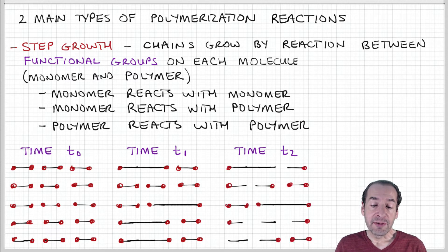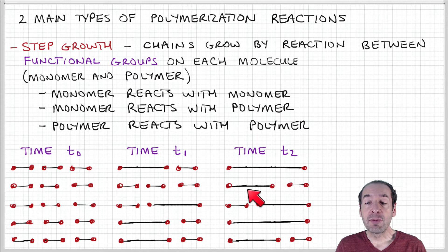Now, for example, this growing chain at the top adds a monomer, so it becomes longer. Two more monomers combine. More monomers and segments of growing chains combine. And so, at each point in time, a distribution of different chain lengths is formed.